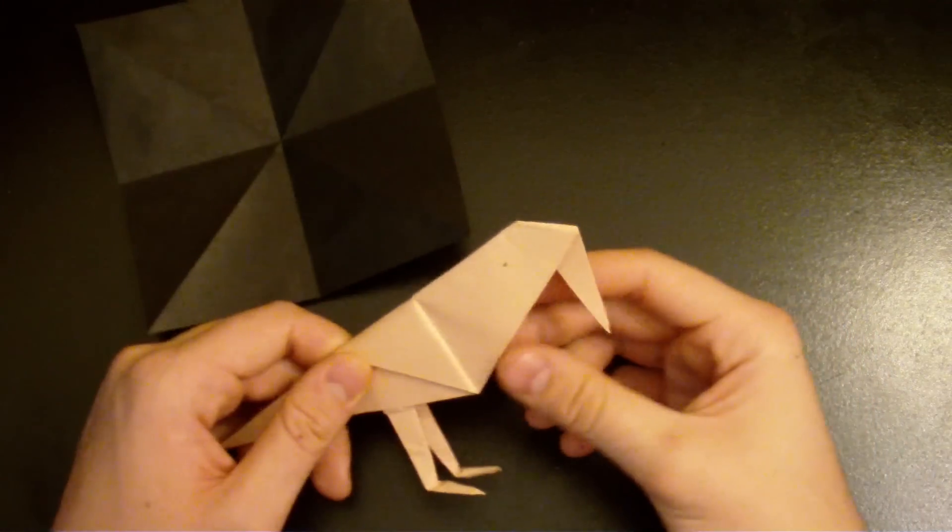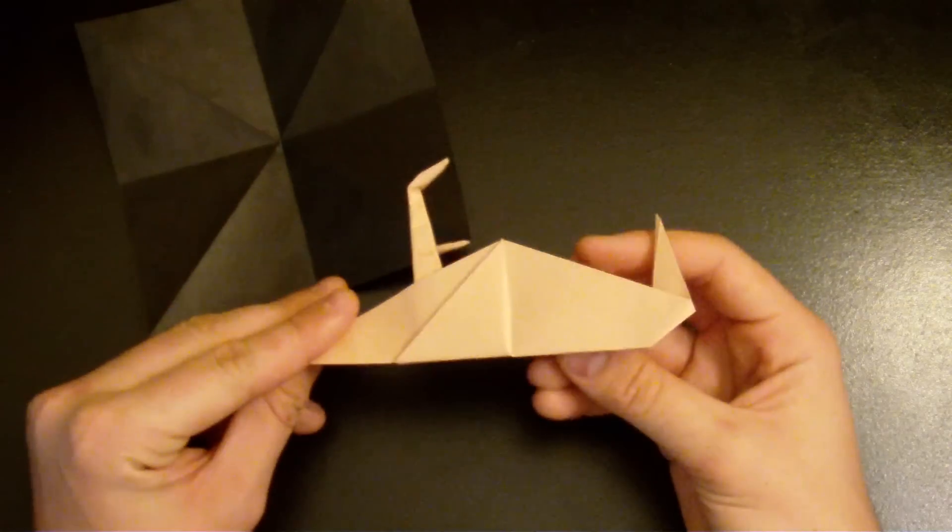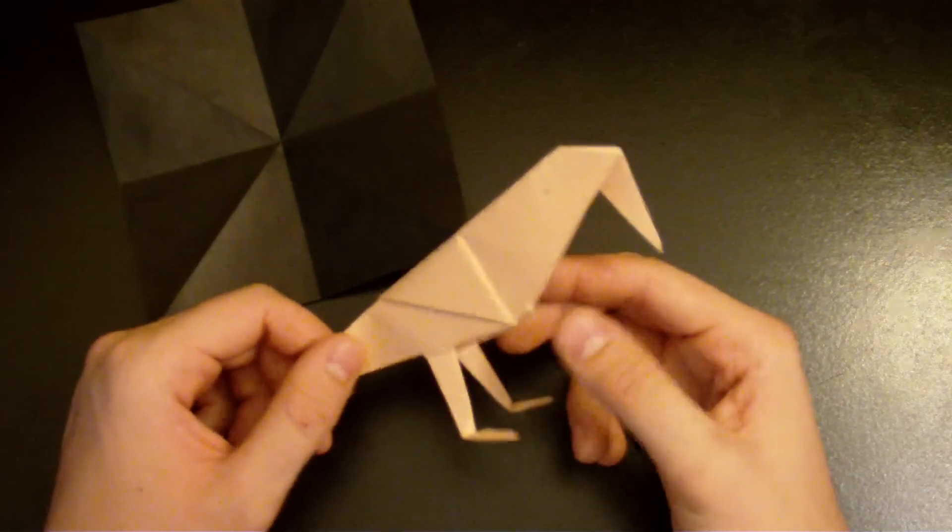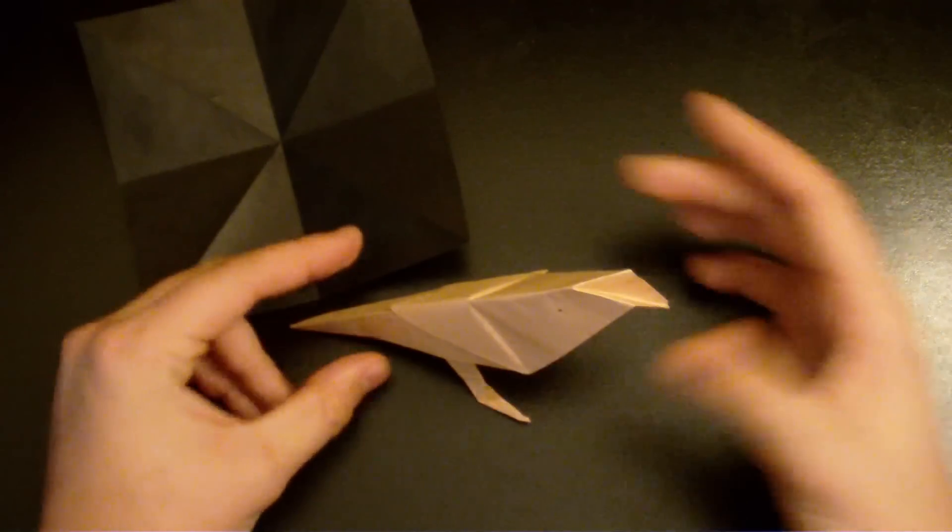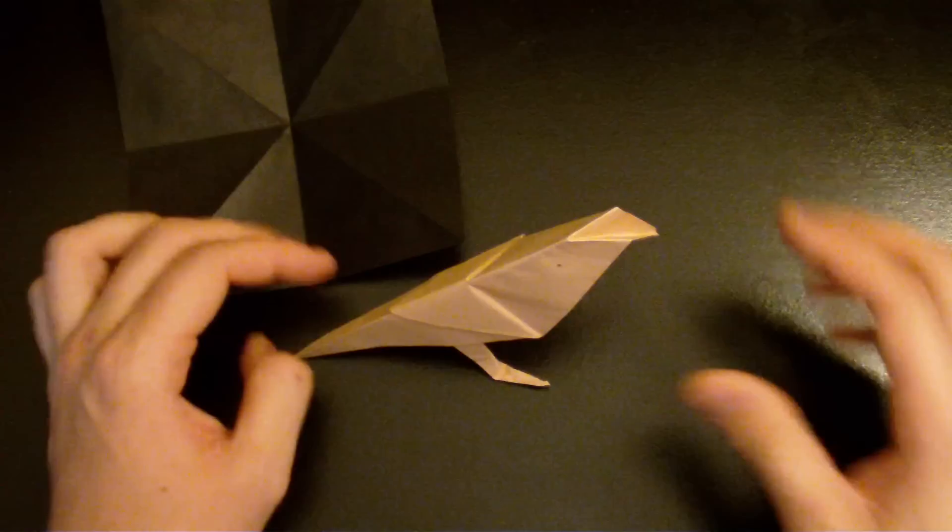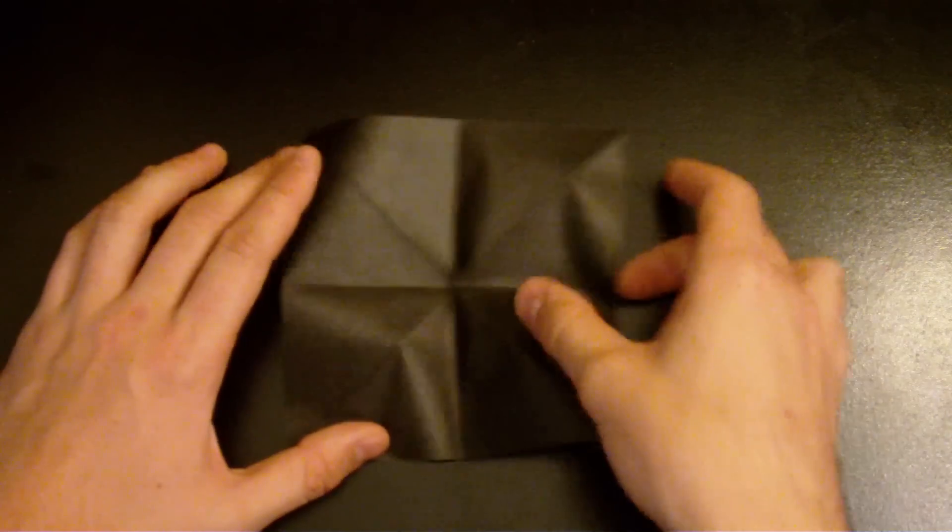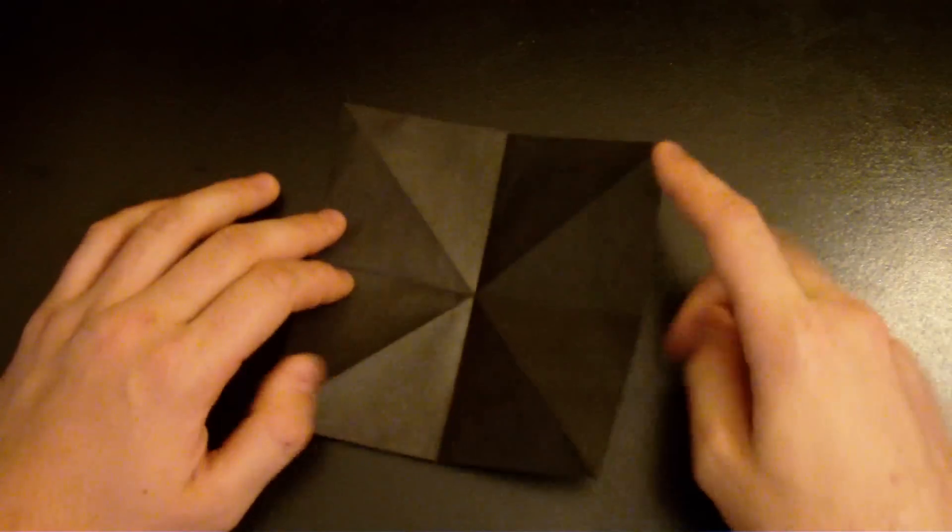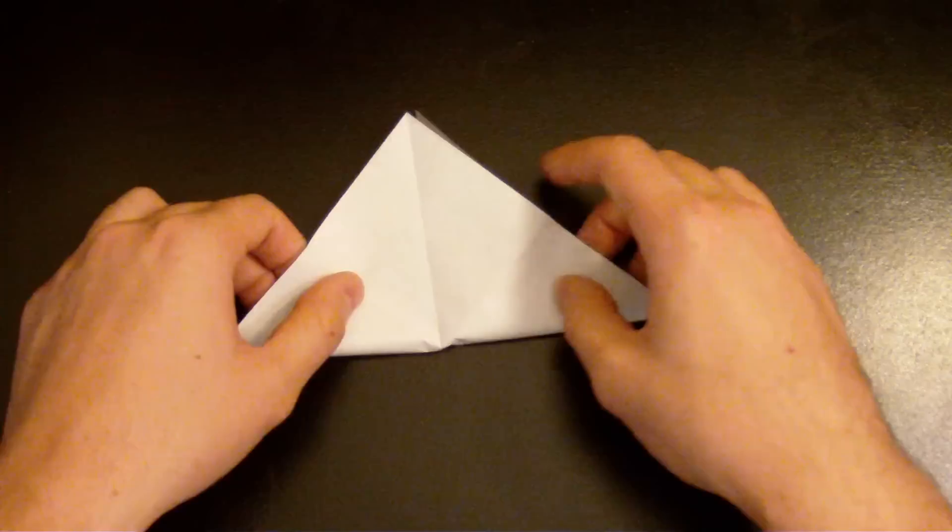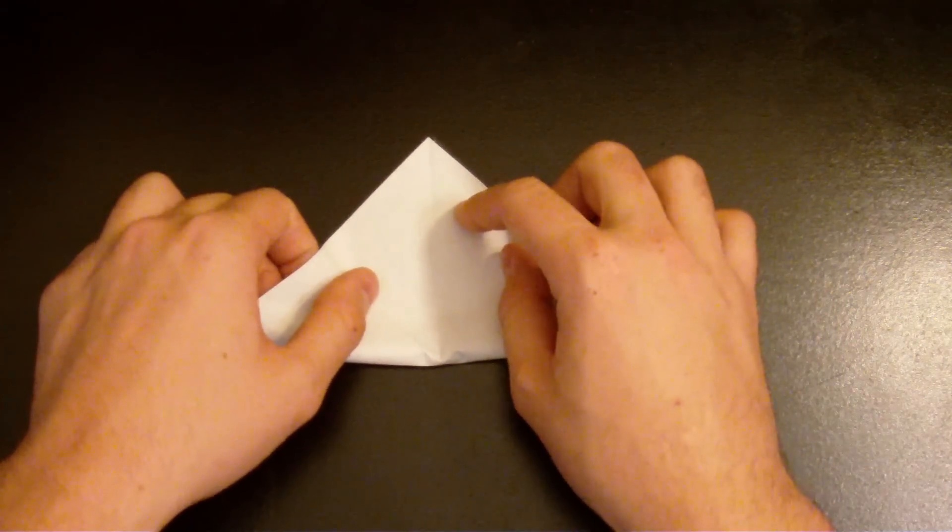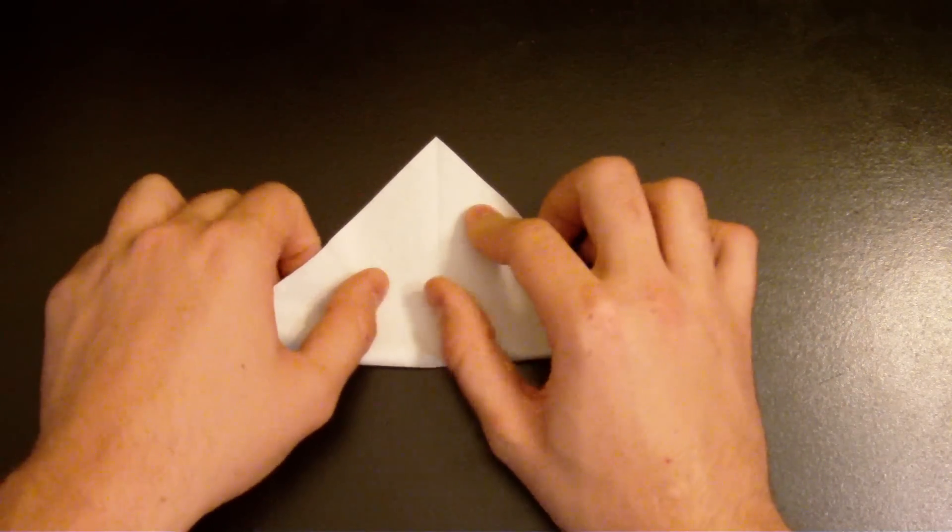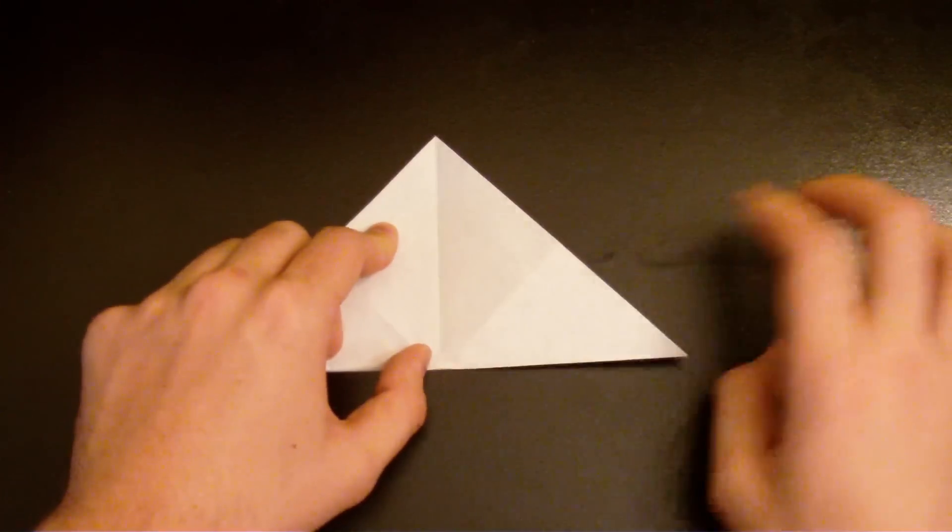Hey what's up YouTube, today we're gonna do origami crane. That's what it looks like, it's a pretty easy model and it stands. Okay let's start. You need a square piece of paper, color side up. Fold it, bring two corners together.